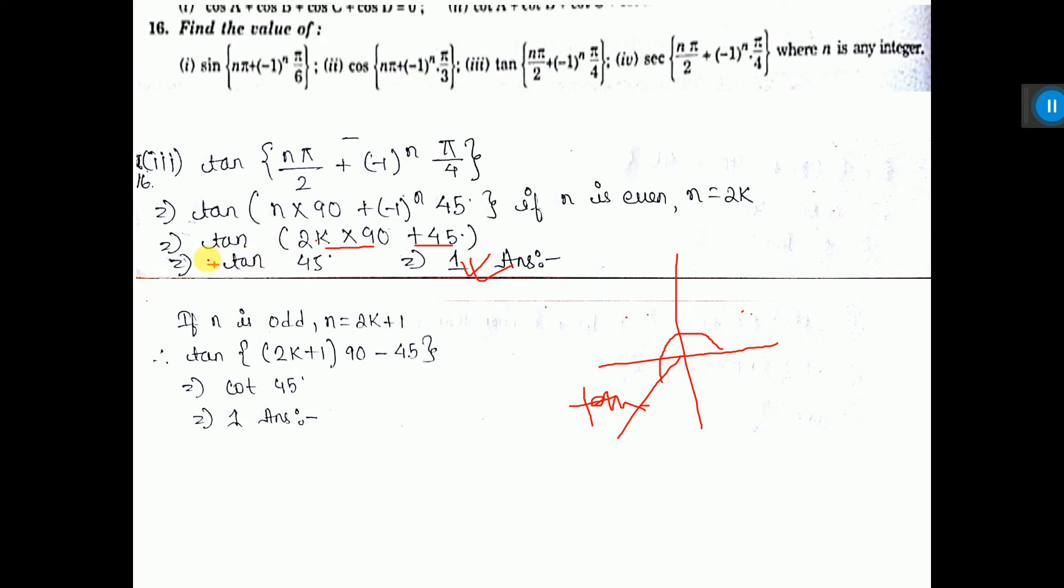Actually, at a time, two things you have to see. One is sine to cos, cos to sine, tan to tan, tan to cot, like this. And another one is the sign. So two things you have to see at a time. So here it is coming 45, the value is 1.